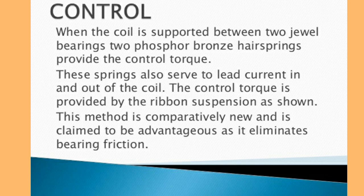Regarding the controlling part in PMMC instruments: the controlling torque is produced by two springs attached to the spindle. The springs are made of phosphorus bronze and placed between two jeweled bearings. The springs also provide the path for lead current to flow in and out of the moving coil — that is, the total current enters through one spring and leaves through the other.